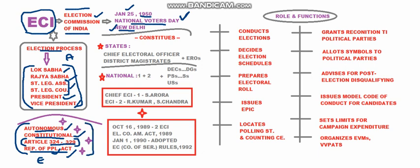To hold elections in states, there are three key authorities: the Chief Electoral Officer, who conducts elections in the state under ECI; District Magistrates, who monitor elections in districts; and Election Registration Officers, who also work to hold elections in states.